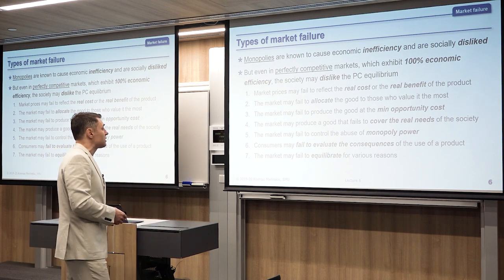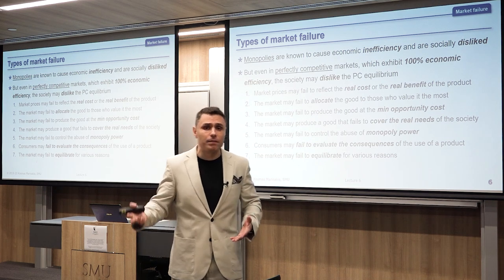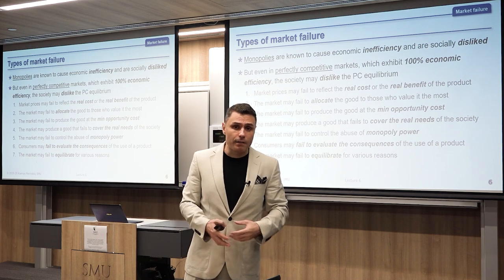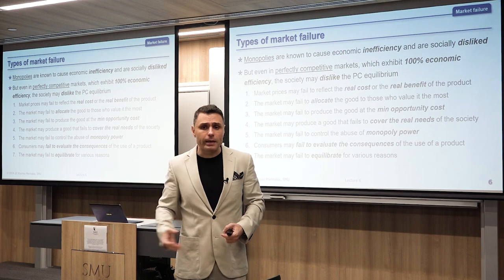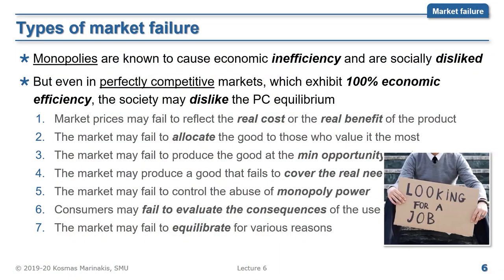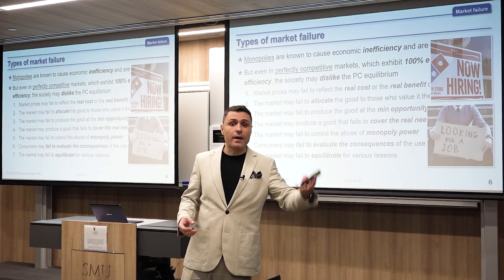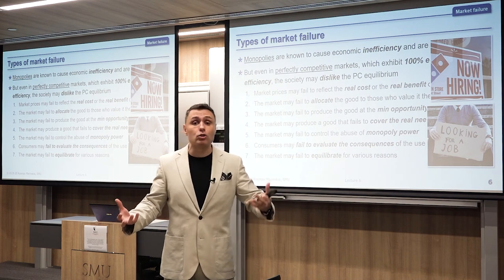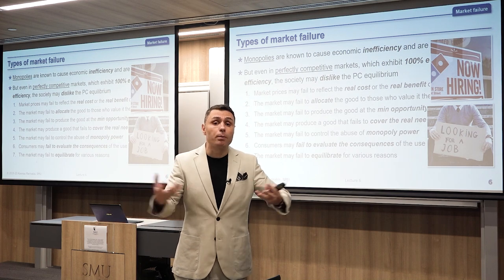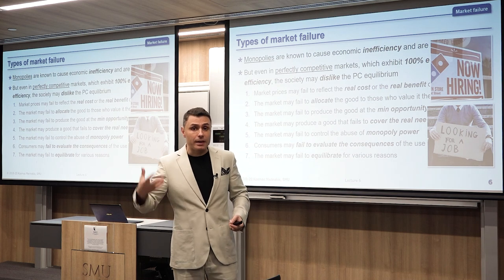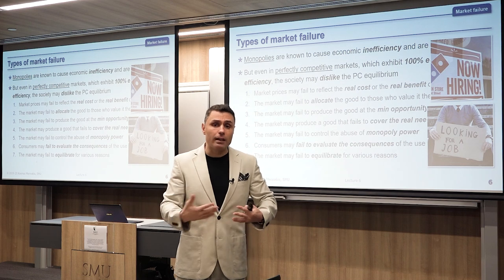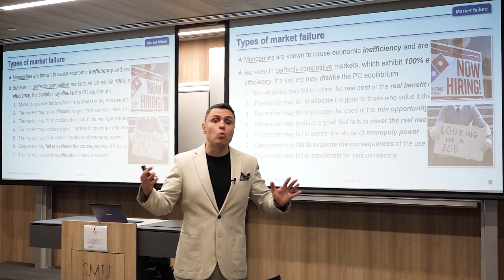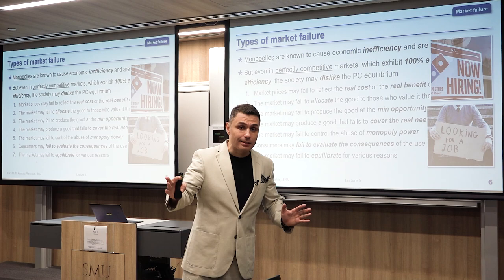Finally, number seven: the market may fail to equilibrate for various reasons. This is what people usually believe market failure is, but it's only one out of seven types. Most of the time markets equilibrate just fine, but sometimes they fail. For example, you can have someone unemployed long-term while at the same time there are vacant positions — employers looking for employees and employees looking for employers, yet they fail to find each other. This market fails to equilibrate. We will discuss this extensively when we talk about the labor market in a later lecture.